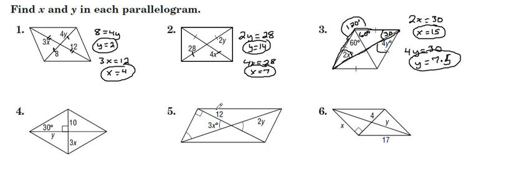Okay, for number four. First, we'll knock out the x variable by these two segments of the diagonal are equal to each other. 10 equals 3x, x equals 10 thirds. That's also 3 and 1 third or 3.3 repeating.